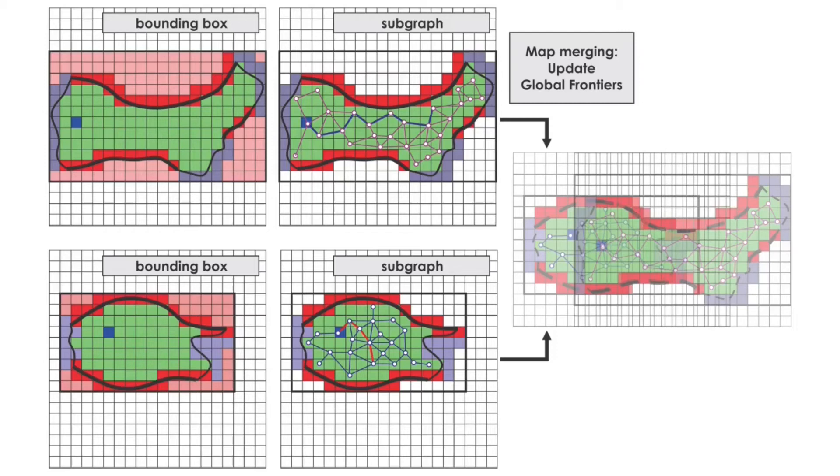If the submap frontier lies at a location on the global map where the state of the voxel is free, then this frontier voxel is deleted as it turns out that it no longer represents a global frontier.